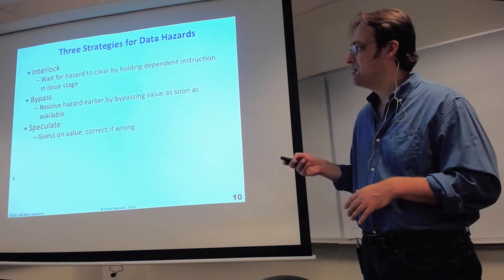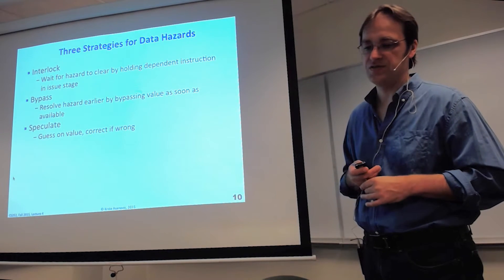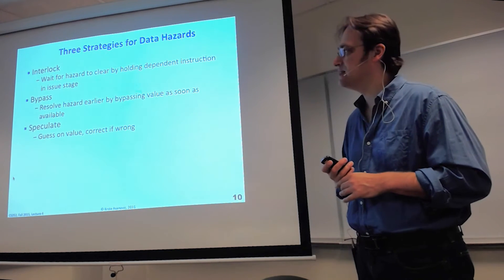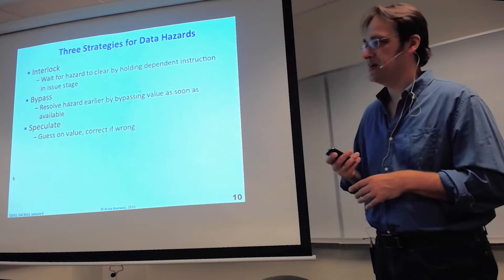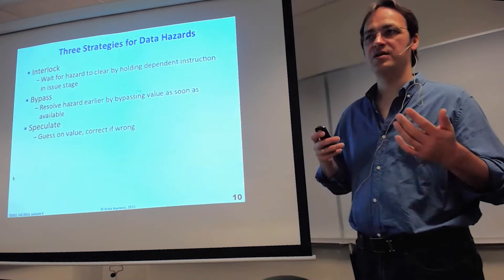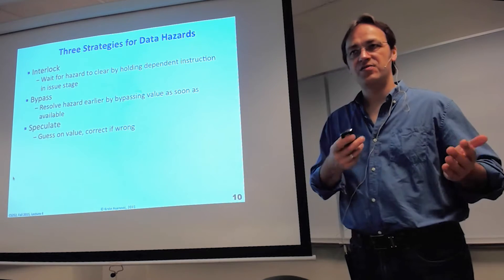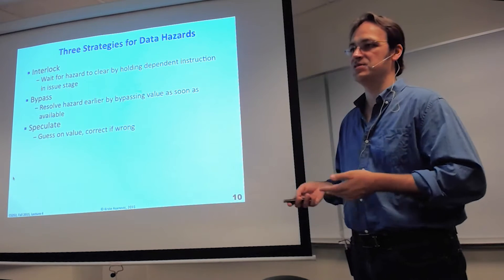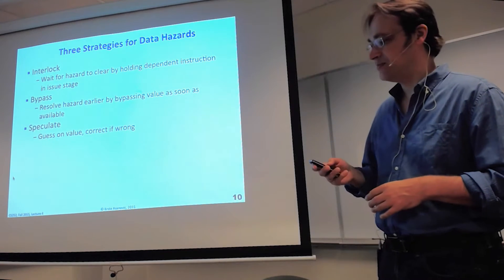Bypassing is a technique to avoid hazards by grabbing a value as soon as it's available anywhere in the machine — primarily used to reduce read-after-write hazards. You can read a value as soon as it's produced anywhere in the pipeline. Finally, you can speculate — basically guessing the value rather than waiting for it. Interlocking and bypassing let the correct value happen; speculation is guessing and then correcting if wrong. Speculation is a common technique used to avoid data hazards.